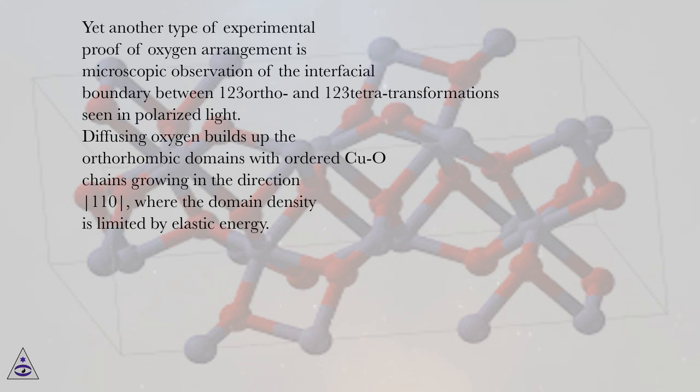Yet another type of experimental proof of oxygen arrangement is microscopic observation of the interfacial boundary between 1-2-3 ortho and 1-2-3 tetra transformations seen in polarized light.